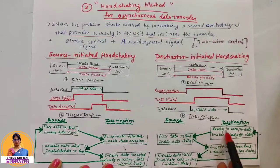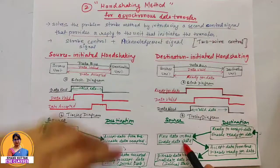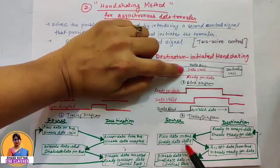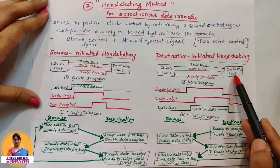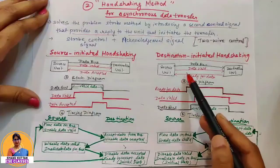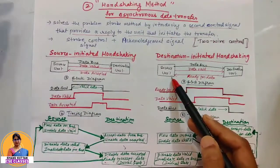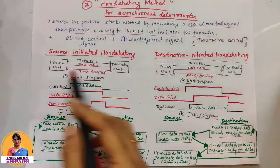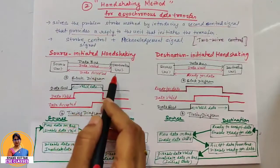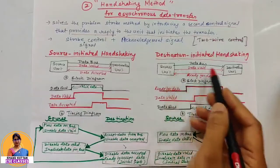Looking at the flow of transfer: first, the destination is ready to accept data and sends the ready for data signal to the source. Upon receiving it, the source puts data on the bus and enables the data valid signal. The destination accepts data from the bus and, once all data is accepted, disables the ready for data signal. The source confirms the signal is disabled — meaning the data has been received — and disables the data valid signal, invalidating the data on the bus.